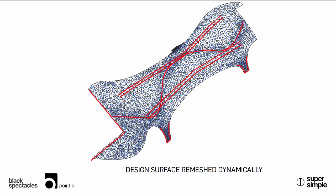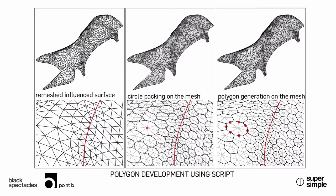Did you really use these lines in Weaverbird in order to influence the density of the remeshing? Yep — three slides down I think we'll come to the actual diagram again.